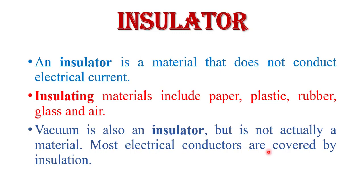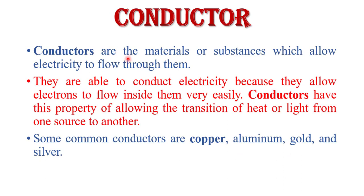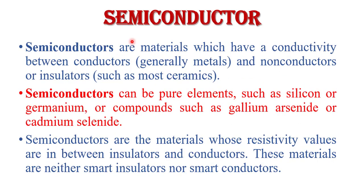Most electric conductors are covered by insulation. Next is conductor. A conductor is a material in which current flows easily. Conductors allow electricity to flow through them easily because they allow electrons to flow inside them very easily. Conductors also have the property of allowing the transition of heat or light from one source to another. Most common conductors are copper, aluminium, gold, silver, etc.